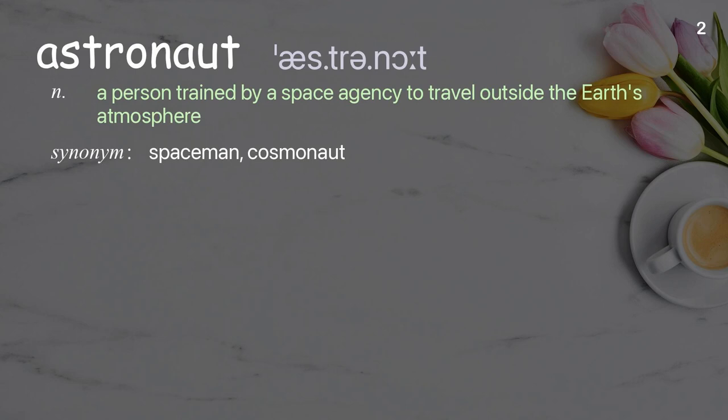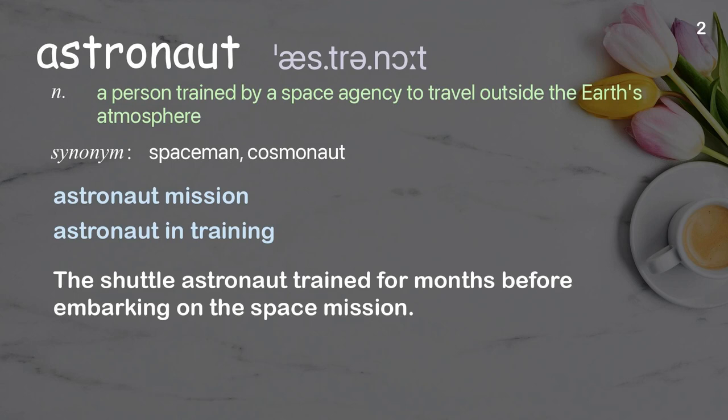Astronaut: A person trained by a space agency to travel outside the Earth's atmosphere. Examples: astronaut mission, astronaut in training. The shuttle astronaut trained for months before embarking on the space mission.